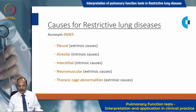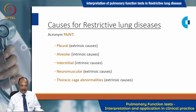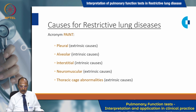Causes for restrictive lung diseases can be remembered using the acronym PAINT: Pleural, Alveolar, Interstitial, Neuromuscular, and Thoracic cage abnormalities. Among these five, alveolar and interstitial constitute the intrinsic causes, and the rest of the three are extrinsic causes.